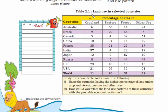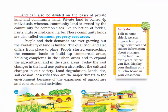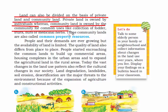Looking at the table of land use in selected countries, India uses 57% of its area for cropland — that's why India is called an agricultural country where agriculture is the prime occupation. Land is divided into two parts: private land, owned by an individual, and community land, owned by the community for common uses like collection of fodder, fruits, nuts, and medicinal herbs. Buying a plot for a house is private land; a public park is community property.